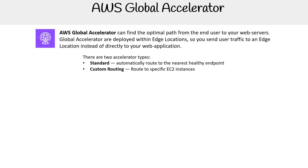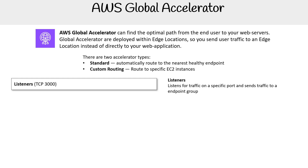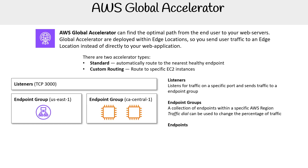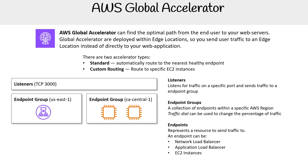Let's take a look at the components involved. We have listeners — they listen for traffic on specific ports and send traffic to an endpoint group. Then you have endpoint groups, which are a collection of endpoints within a specific region. There is a traffic dial that can be used to change the percentage of traffic between these. We have your endpoints, which represent a resource to send traffic to. An endpoint can be a Network Load Balancer, Application Load Balancer, EC2 instance, or Elastic IP.